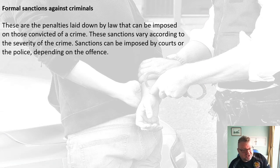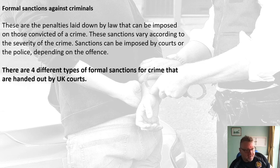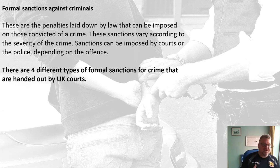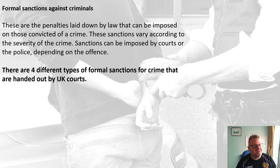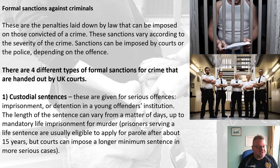When it comes to sanctions, it's really important you understand the four categories of formal sanctions that we have in law in our society. Anyone convicted of a crime will receive one of these four sanctions, which can be imposed by the court or the police. In court, four formal categories are handed out — you have to know these four categories. The first category is a custodial sentence: basically you go to prison, and these are given for serious offences.